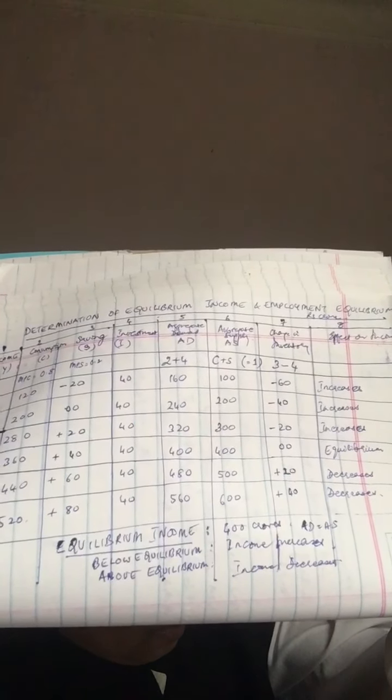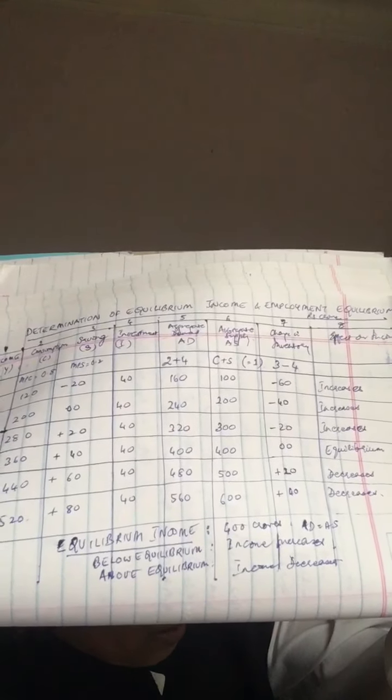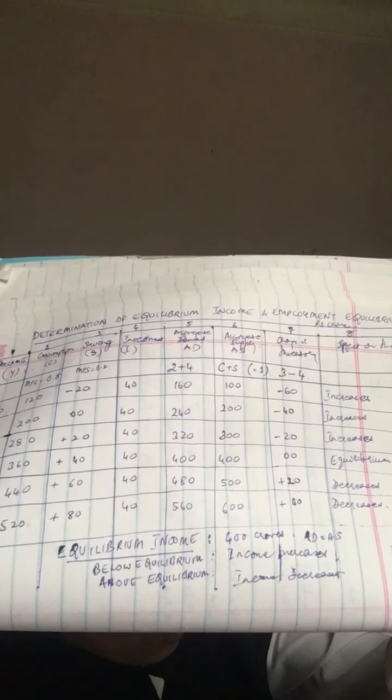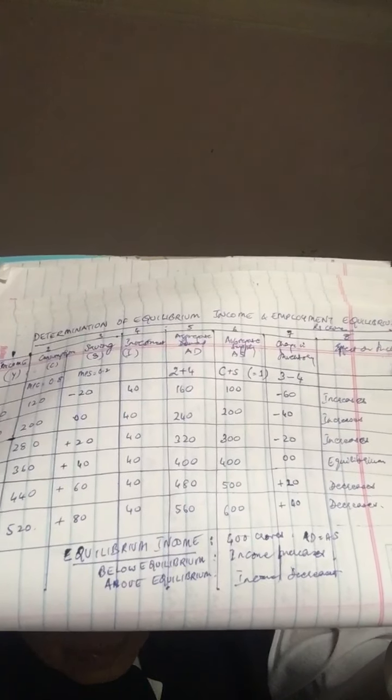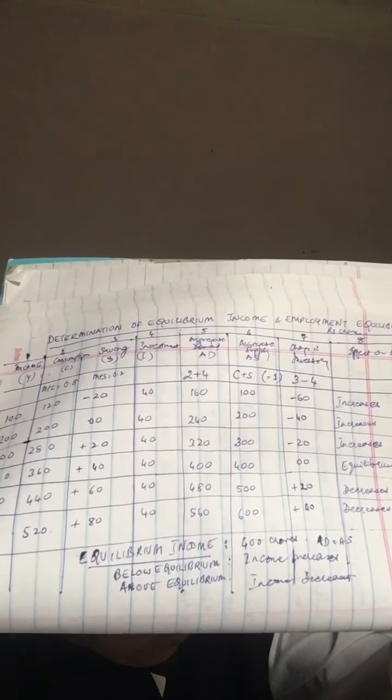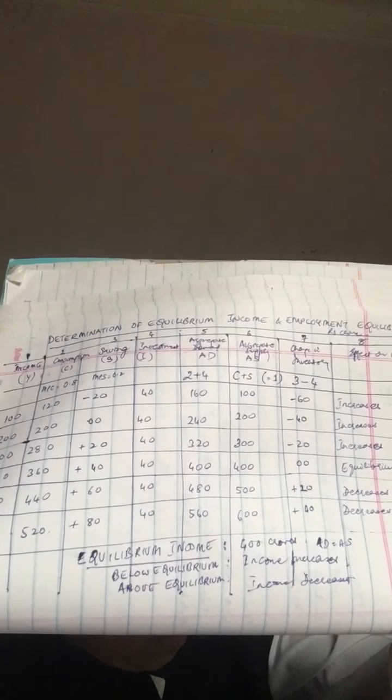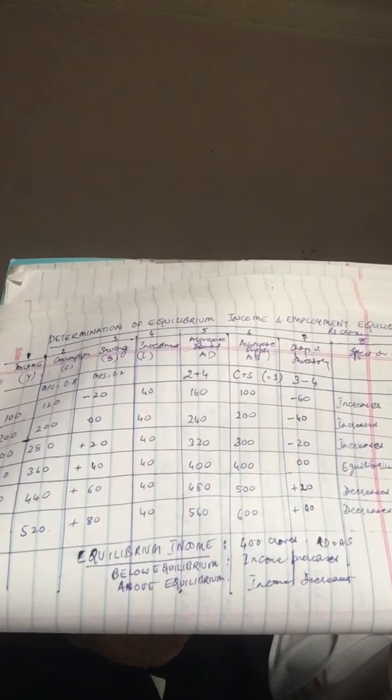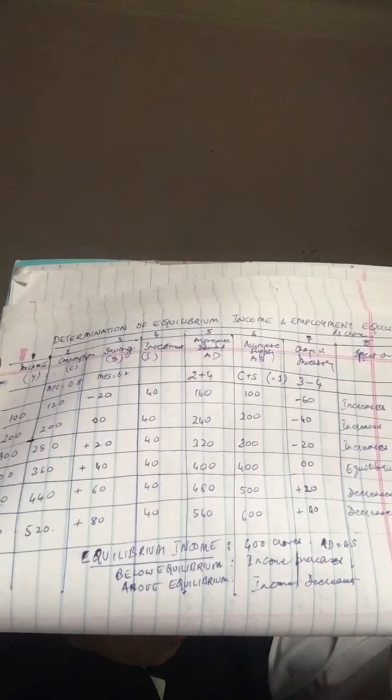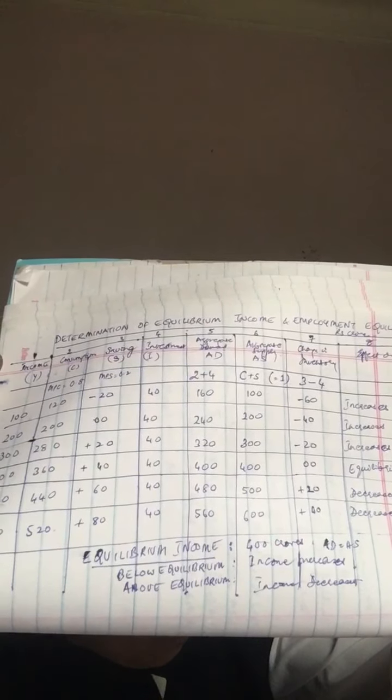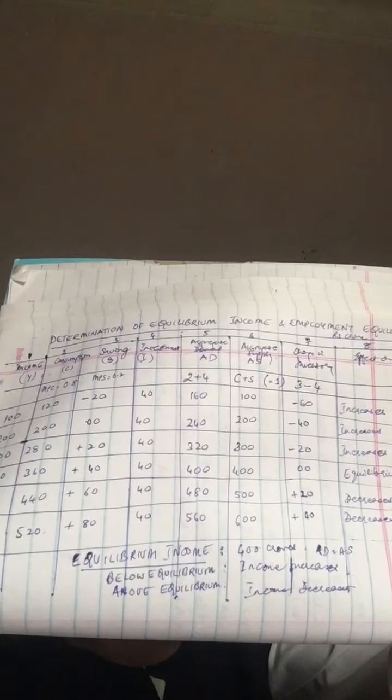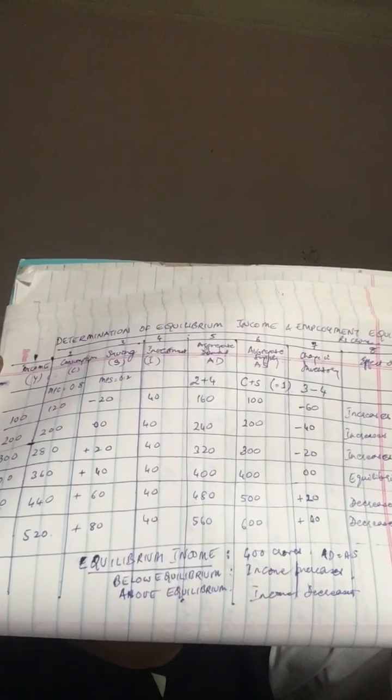So here we go. Working out 80 percent of income, in the beginning we see income of 100, the consumption is much more at 120, so savings are minus 20. The investment in the economy is given as 40, and aggregate demand is C plus I, which is equal to 160. Aggregate supply is C plus S, which is 120 plus minus 20, so it becomes 100. Change in inventory is S minus I, and the effect on income - it increases.